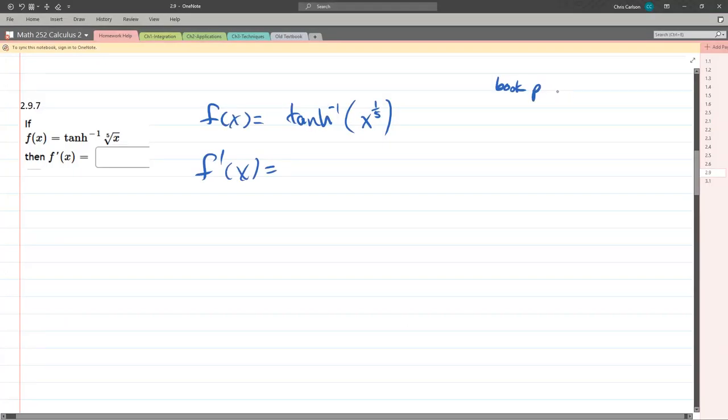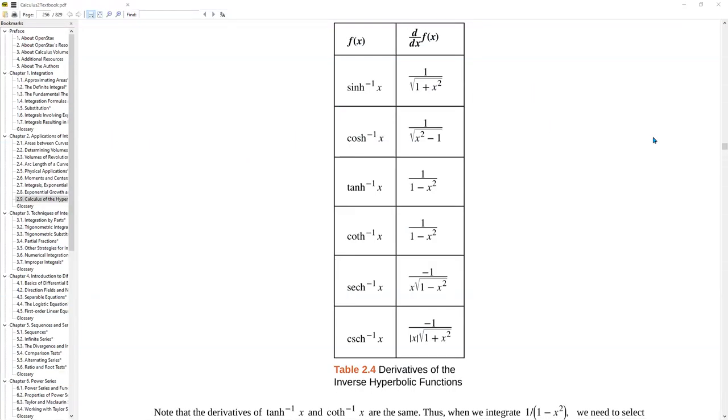248. So we have d/dx tanh inverse x equals 1 over 1 plus x squared. That can't be right.